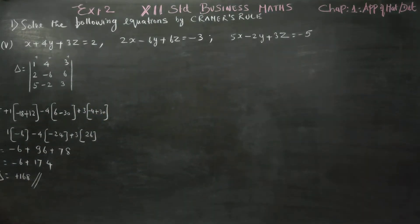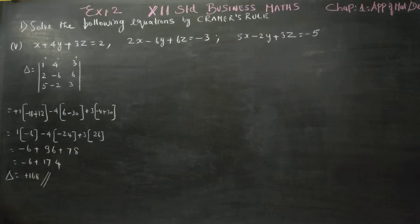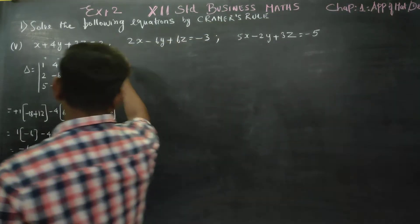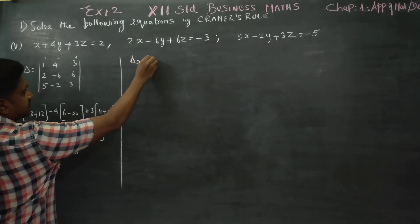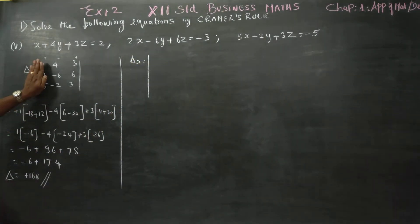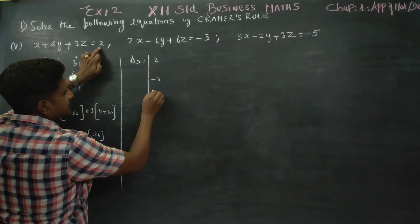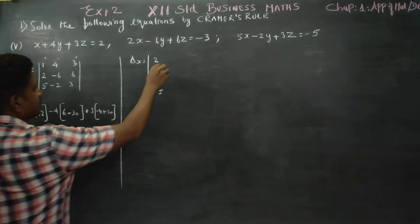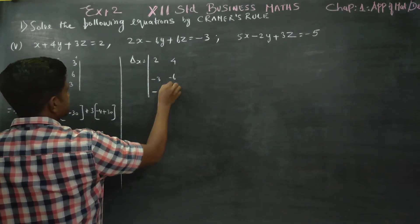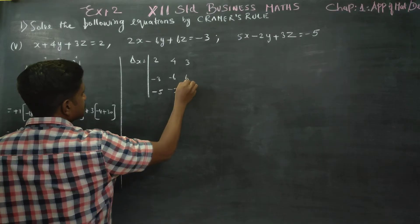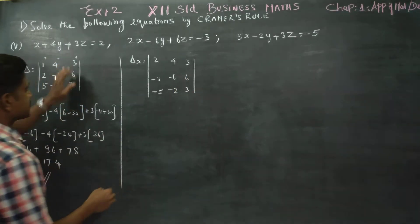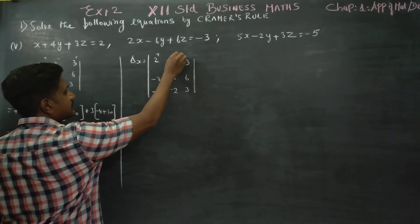After finishing delta, we have to enter into delta x. Delta x means you have to remove the coefficients of x and introduce 2, minus 3, minus 3, minus 5. Then it is 4, minus 6, minus 2, 3, 6, 3. That is as it is. Plus, minus, plus.